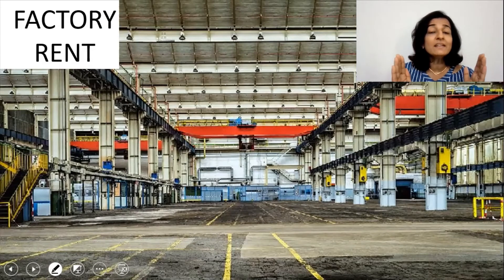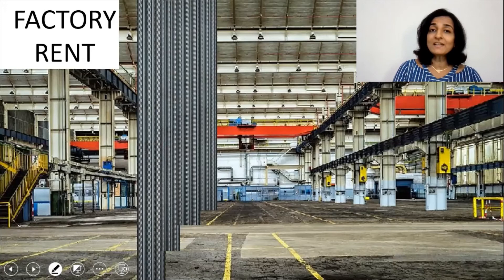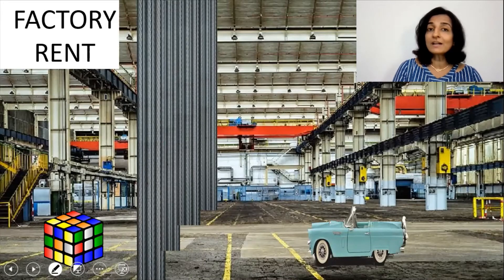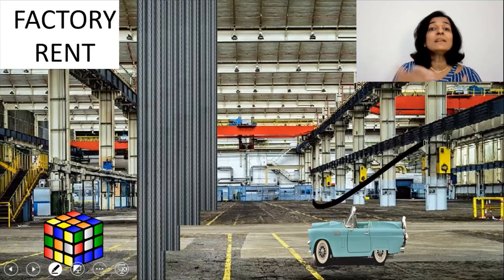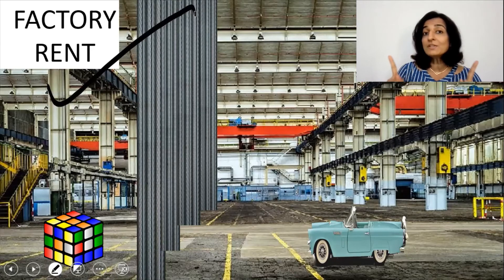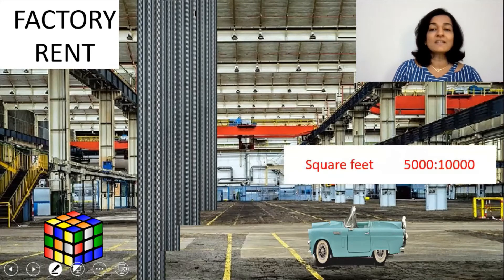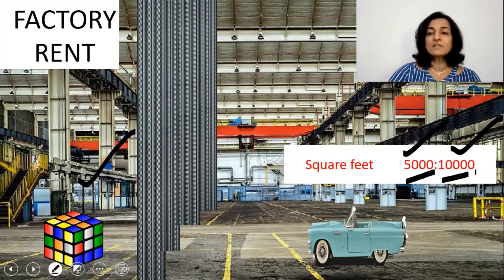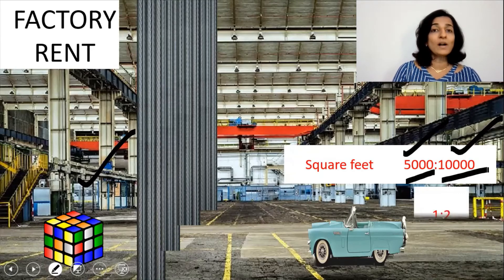The next fixed overhead is the factory rent. How would you divide it between the two products? Let's check the area occupied for manufacturing each product. On the left side, production of the Rubik's Cube takes place; on the right side, production of the Toy Car takes place. The area occupied for the Toy Car is double that of the Rubik's Cube. So the factory rent has to be divided based on square feet occupied — say 5,000 square feet for Rubik's Cube and 10,000 for Toy Car, giving a ratio of 1 to 2.